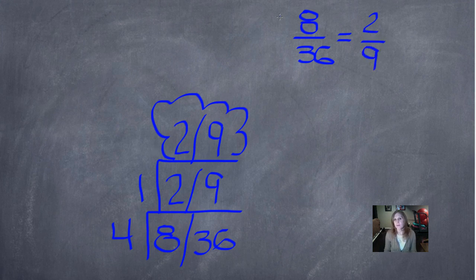Remember when we did equivalent fractions the other day? You could do the same thing here. What do we do to 8 to get 2? And we would divide by 4. What do we do to 36 to get 9? You have to do the same thing, so it will be divided by 4.